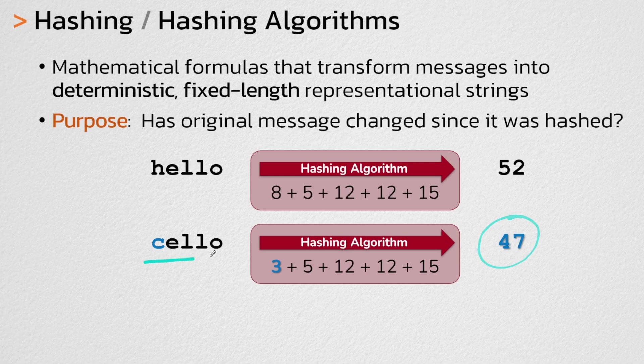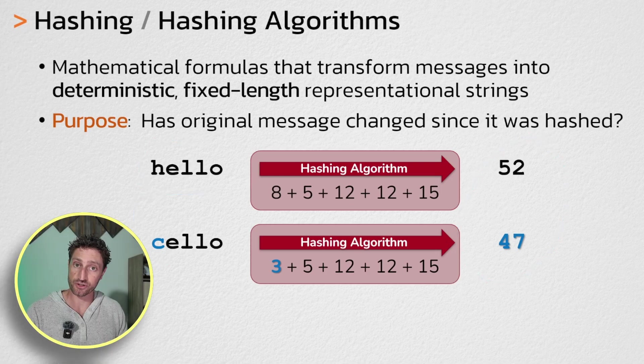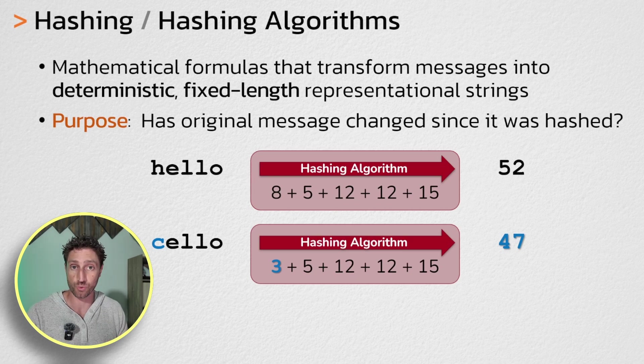47 is the digest which represents the word cello and 52 is what represents the word hello. And we can easily tell that this message is different from this message by simply comparing the resulting digest. Since the digests are different, we know that the original messages must be different as well.